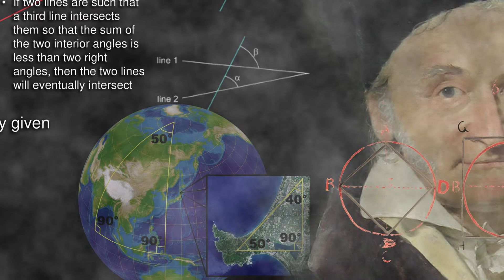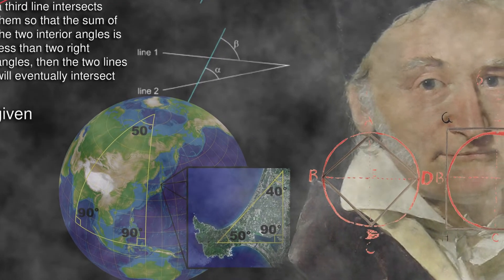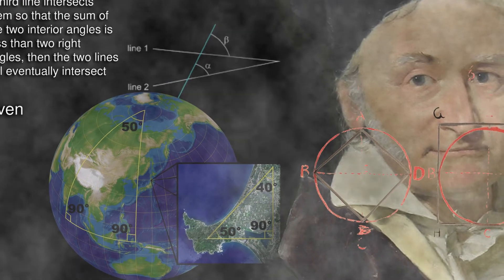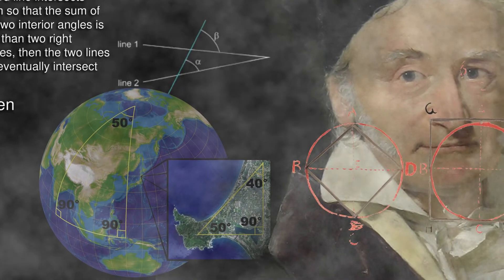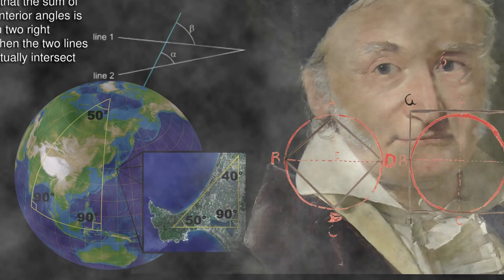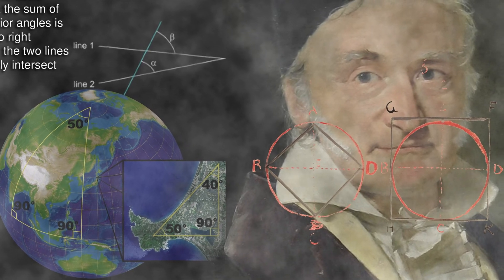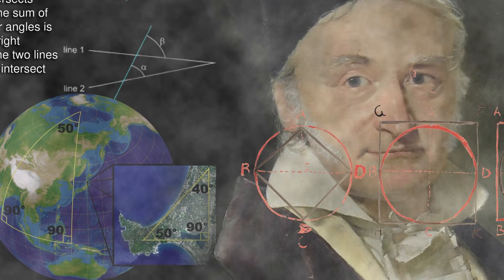Yet the work that Euclid did in the 3rd century BCE has formed the foundation of geometry for more than two millennia. Even more profoundly, his insistence on establishing truth by watertight reasoning based on logic, deduction, evidence, and proof has been the bedrock of every advancement through history.